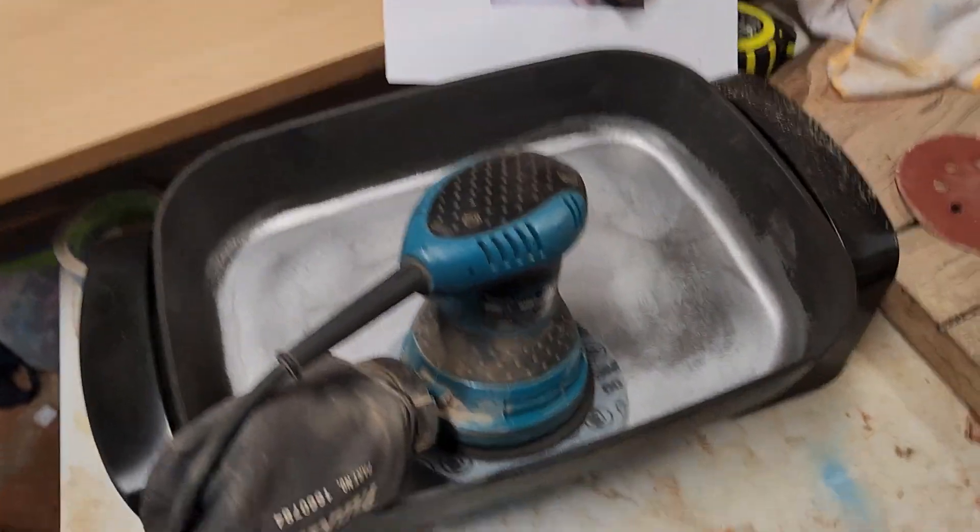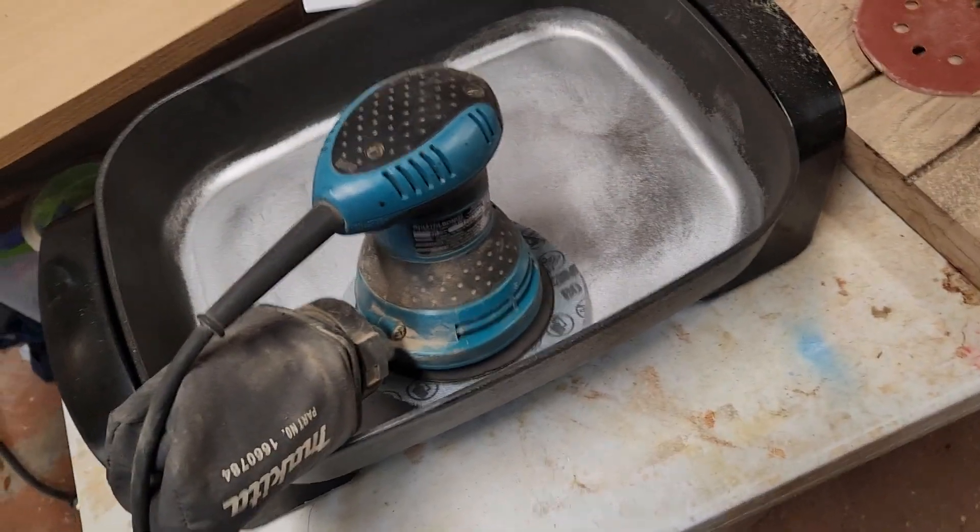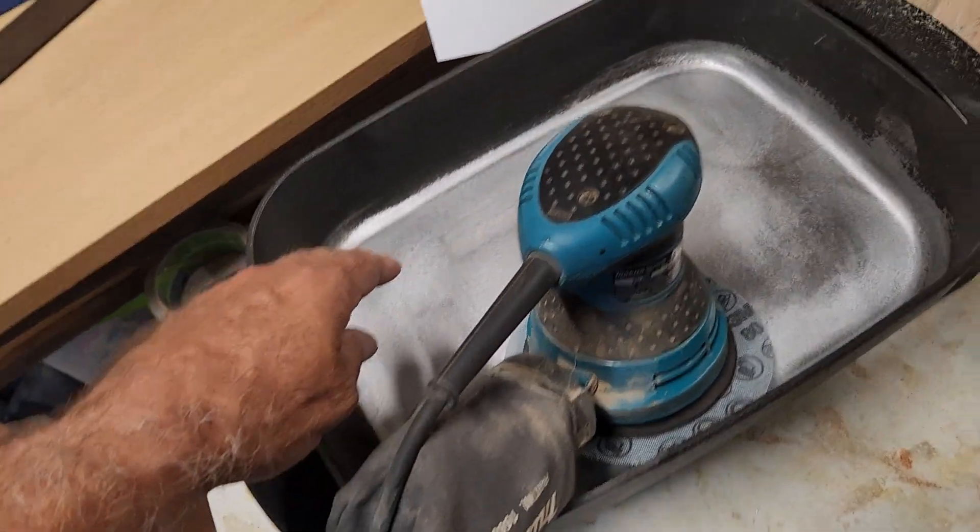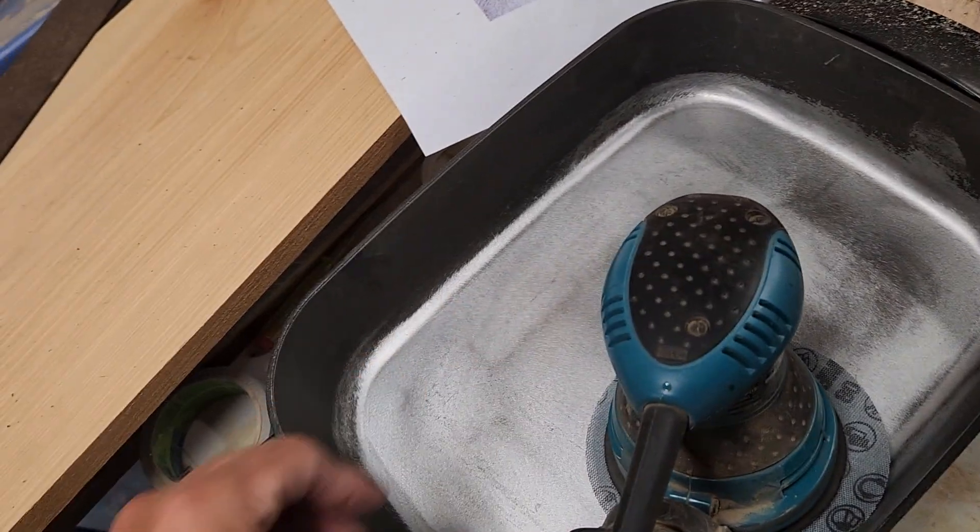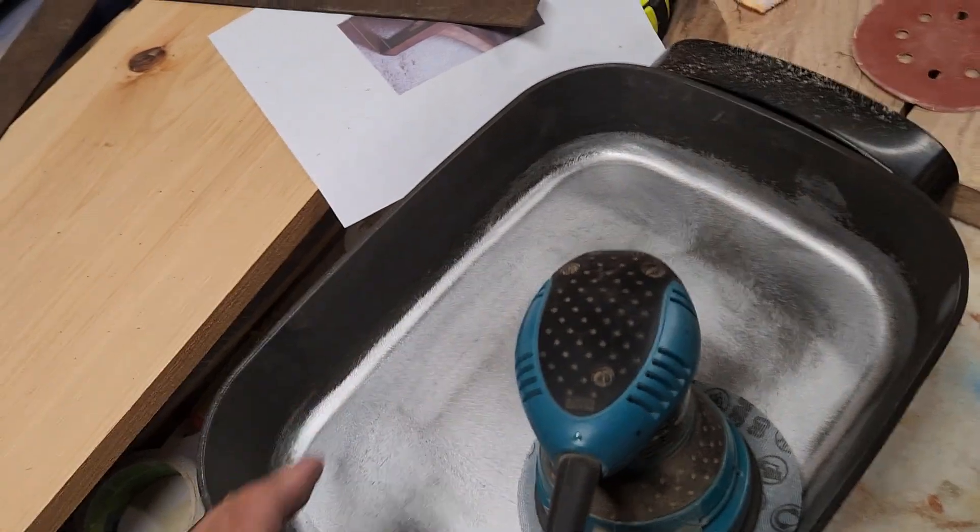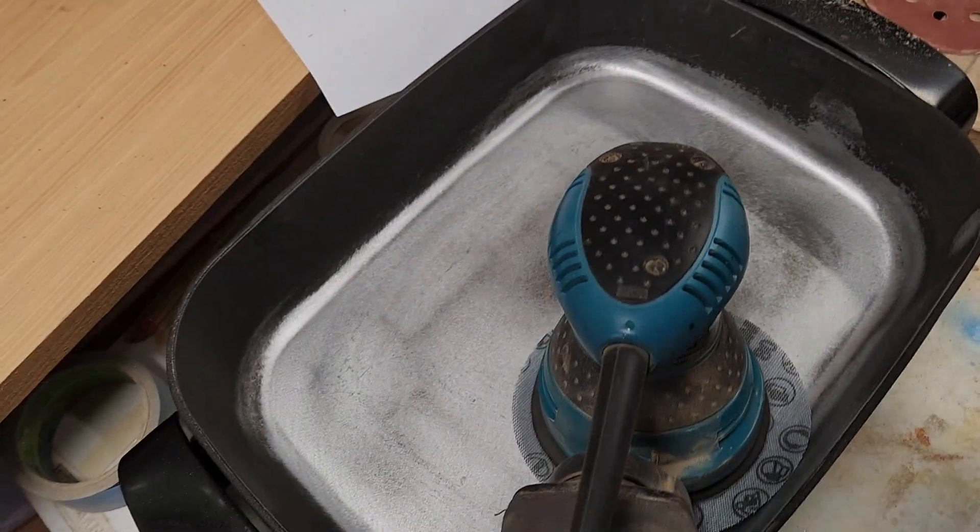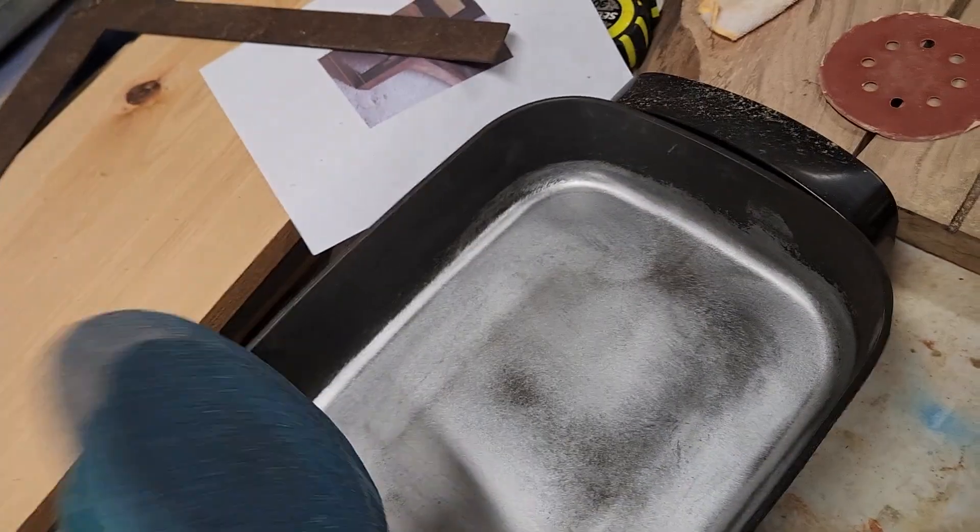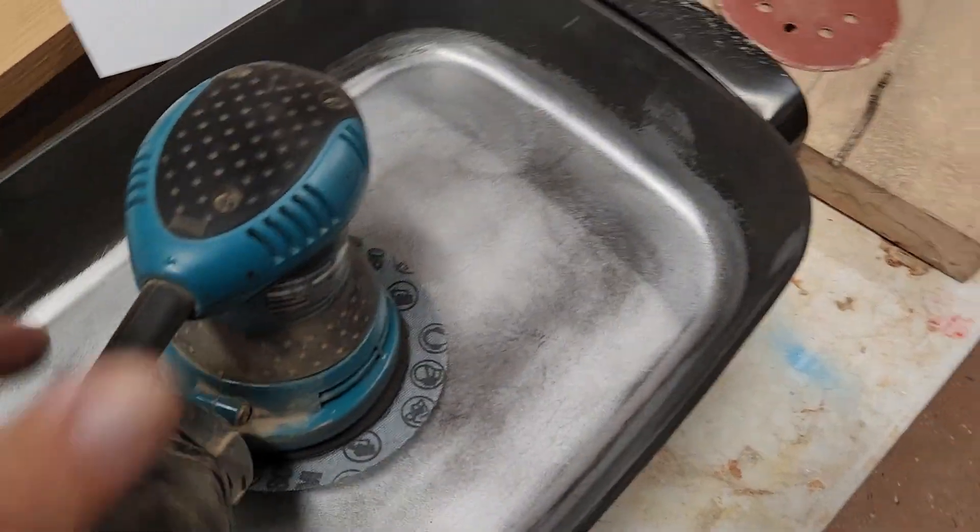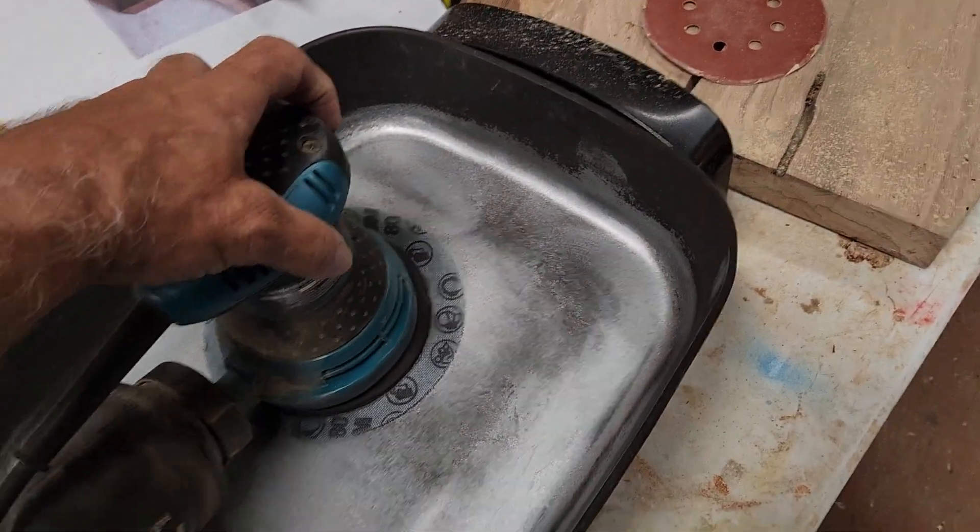So you have those Teflon pans that you're worried about, all the scratches and everything, that you're eating all that Teflon. Here's an idea. Take yourself some 80 grit sandpaper and sand away on it because what will happen.